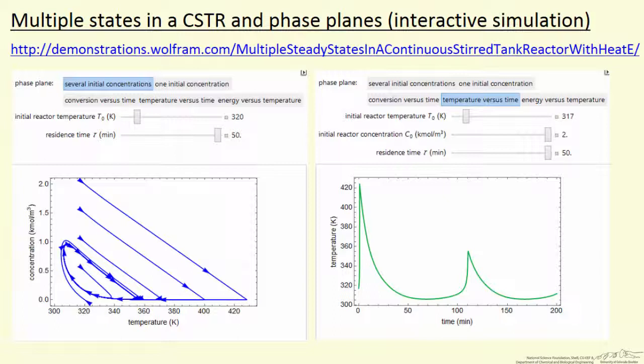I can also do just one initial concentration. And then I can plot temperature versus time for just one and you can see you get oscillations that continue on.